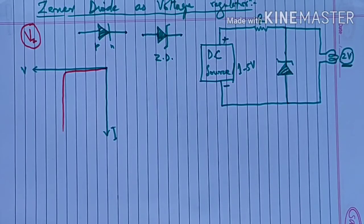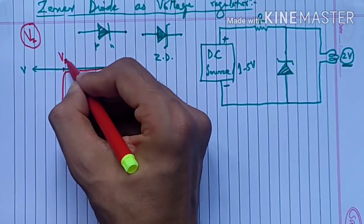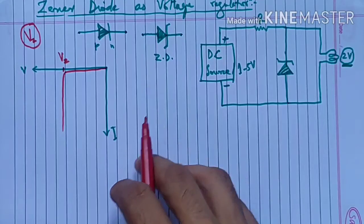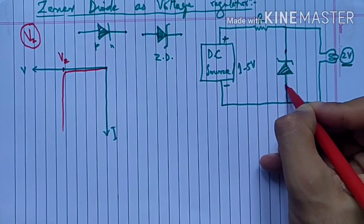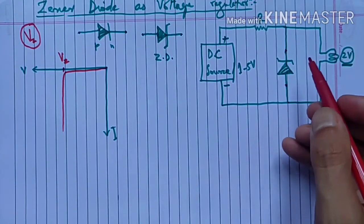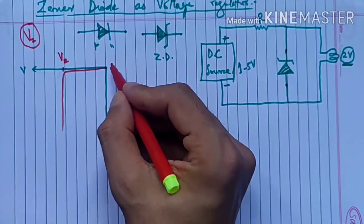Zener breakdown के बाद there will be abrupt increase in current। अब आप देख सकते हैं कि current continuously बढ़ रही है without any change in voltage - यानि कि यह Vz पर current बढ़ती जाती है। Zener diode allow करता है current to flow without any change in potential difference या voltage across its two terminals। Zener diode के 2 terminals हैं, इनके across जो voltage है वो अब change नहीं होगा at zener voltage, at zener breakdown। तो यही property इसको help करती है use करने में as voltage regulator।